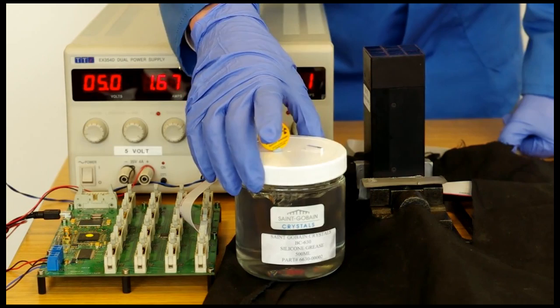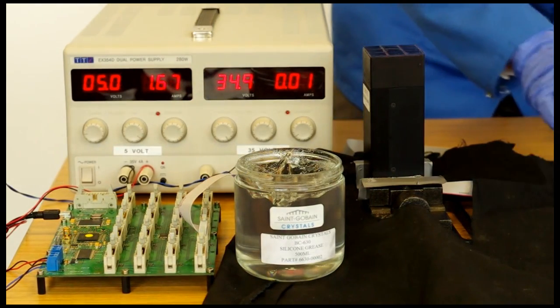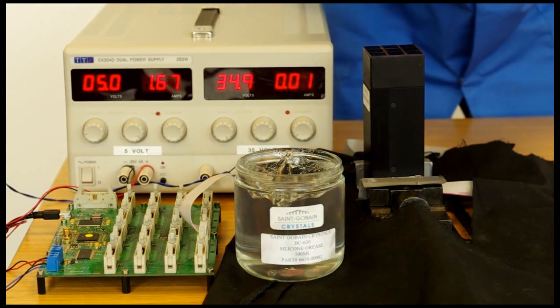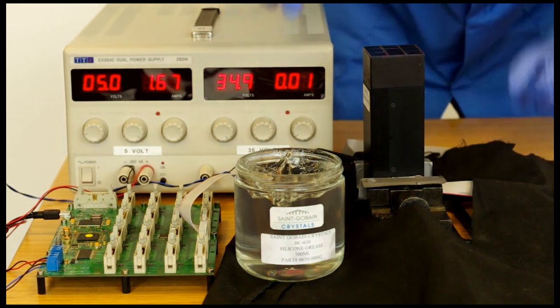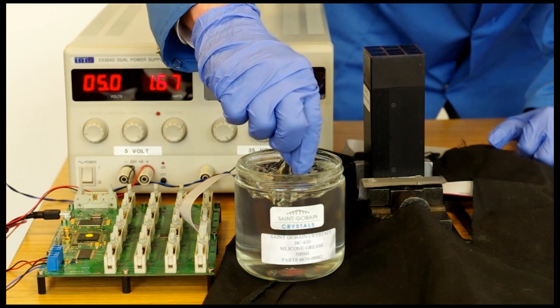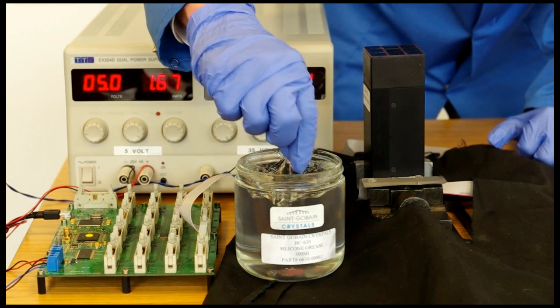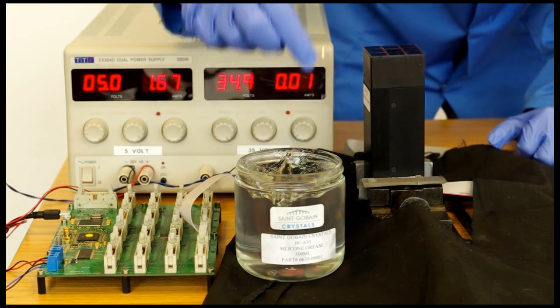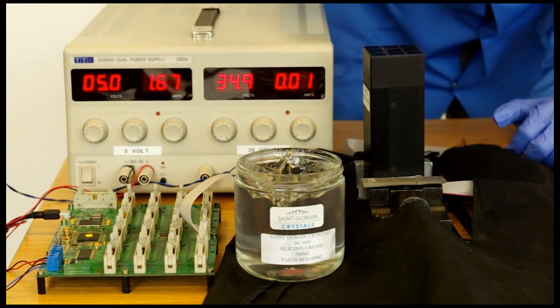So now what we're going to do is show how the LYSO crystal can be mounted onto the Matrix SL9 readout head. What I'm going to do is take our crystal and put just a small amount of the coupling grease on the light emitting face of the crystal.